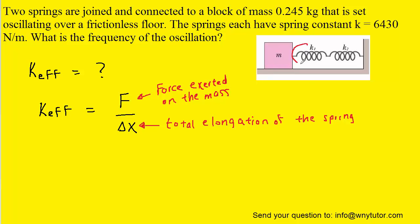We can imagine that the spring on the left is elongated by an amount that we can call delta x_L, and similarly, the spring on the right is elongated by an amount that we can call delta x_R.